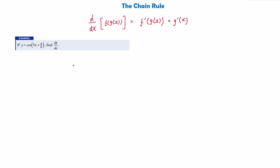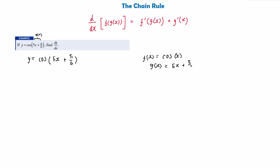Let's do a more complex example of the chain rule where we have cosine involved. If y equals cos(5x + π/6), find the derivative dy/dx. In this case our g(x) — the thing inside the brackets — is 5x + π/6, and our f(x) is cos x. G(x) will always be the thing inside the brackets when you're doing the chain rule.